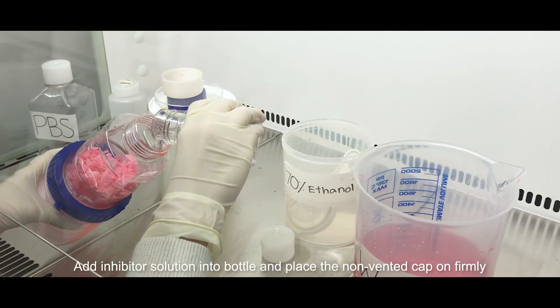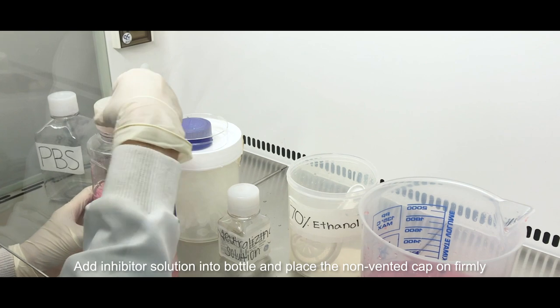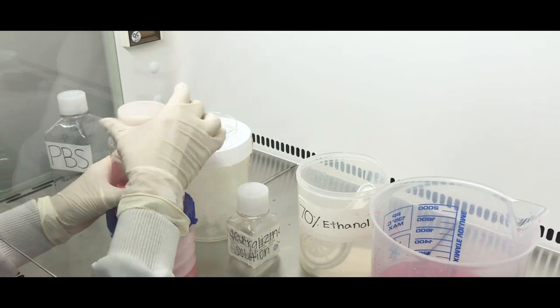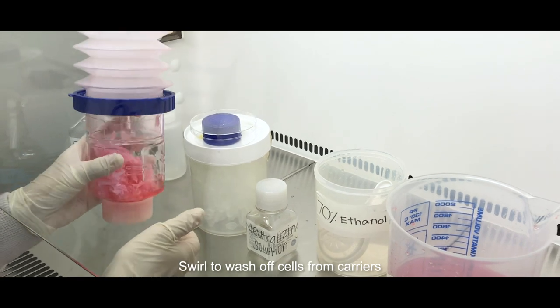Next, add inhibitor solution into the bottle and firmly cap the bottle with a white non-vented cap. Invert and swirl the bottle to wash off cells from the carriers.